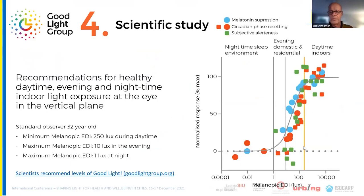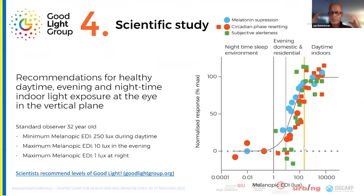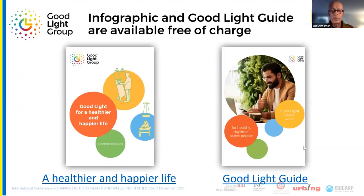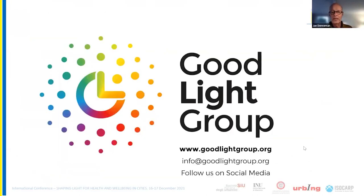The solution is personal good light for indoor environments. Scientific publications confirm that typical indoor light levels do not exceed the thresholds at which ipRGCs begin firing time signals to the SCN — the master clock. The Good Light Group provides a summary infographic 'A Healthier and Happier Life' and an extended Good Light Guide. More information is available at goodlightgroup.org.